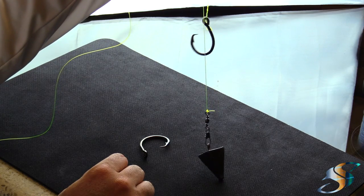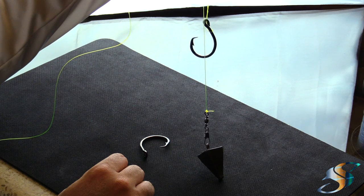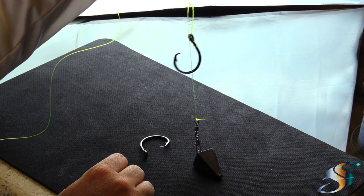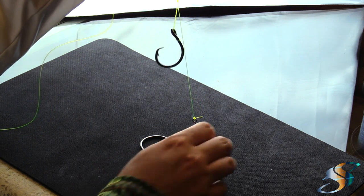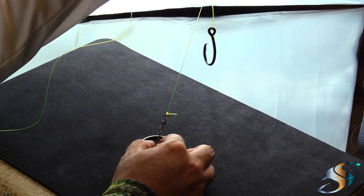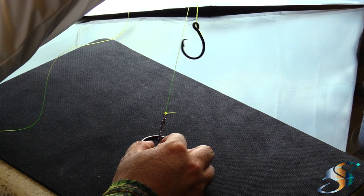Now keep in mind this is obviously a lot heavier hook because I'm showing it for demonstration purposes, but I think this gives you the idea of how that's supposed to look. Now let's proceed to tie the second loop.